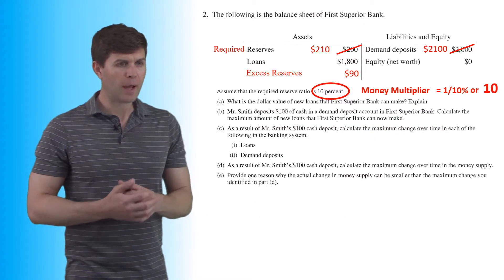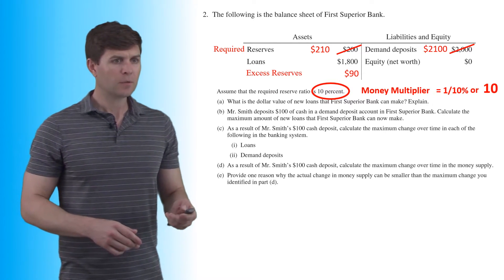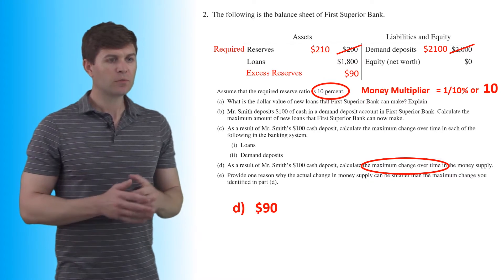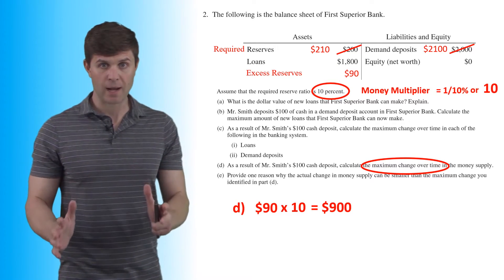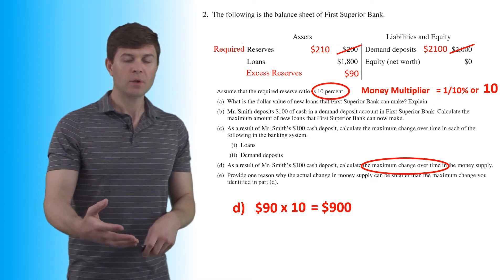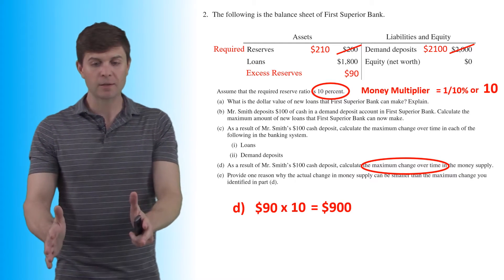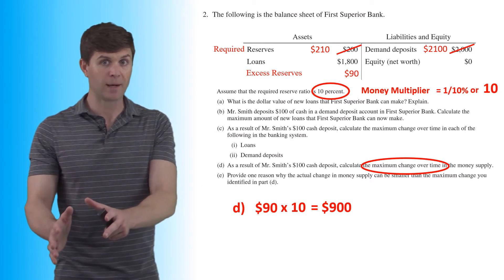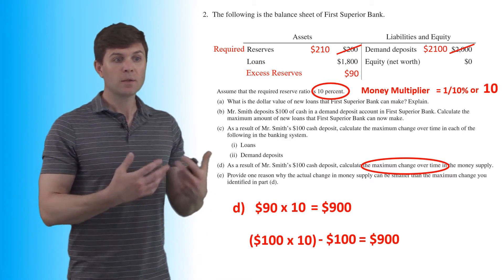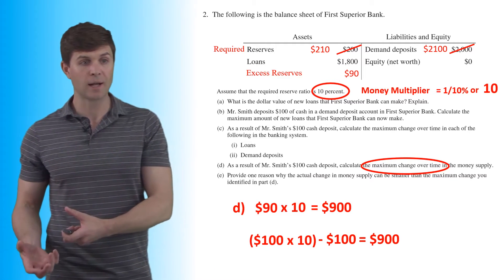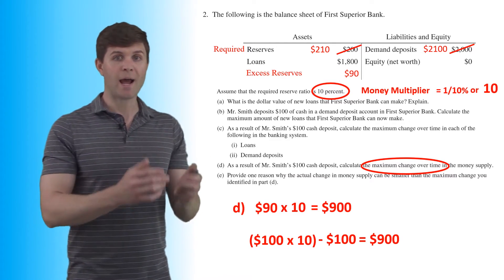Part D asks for the maximum change over time in the money supply from Mr. Smith's $100 deposit. We have $90 to loan out, multiplied by 10, giving $900. We don't count the initial $100 deposit because that money already existed in the money supply before the deposit. So $100 times 10 equals $1,000, minus the $100 that was already there, gives a net increase of $900 in the money supply.